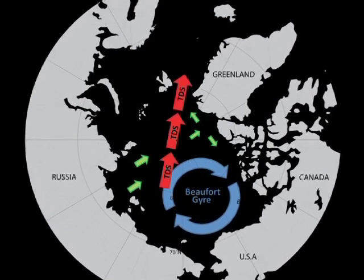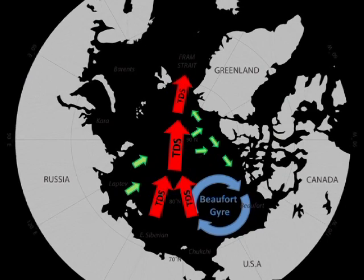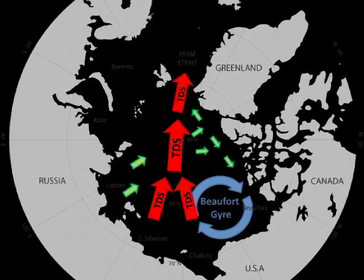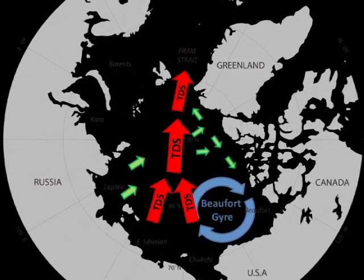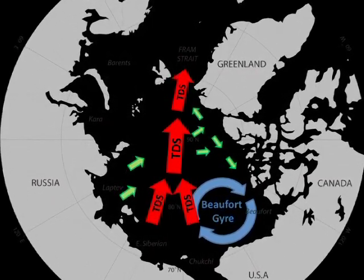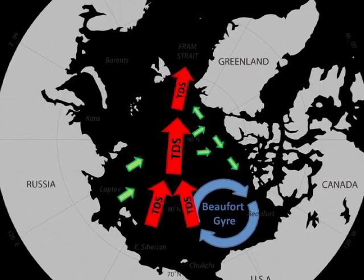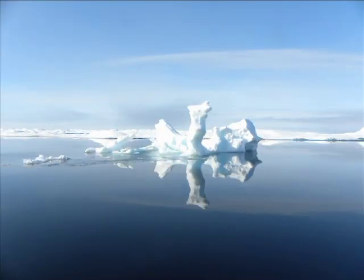During this recirculation, ice is able to age and grow through both the dynamic and thermodynamic processes. However, with decreasing trends in ice age, thickness and extent, the ice pack is more mobile and the gyre may be changing and becoming more variable.